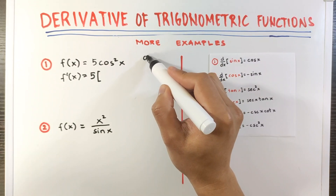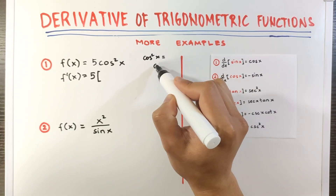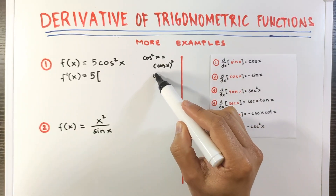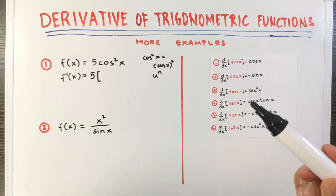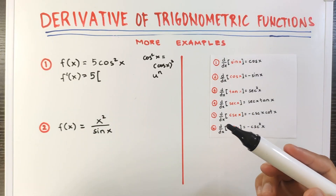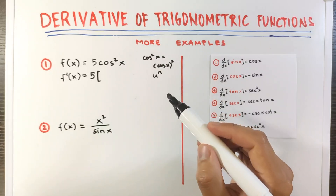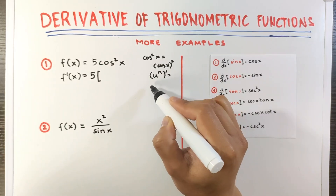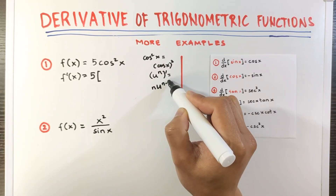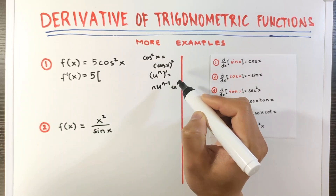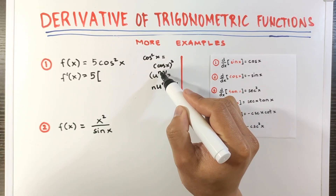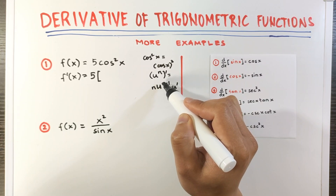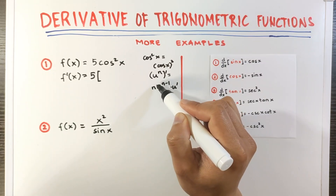Cosine squared x can be written as cosine x, the quantity squared. As you can see, this is in the form u raised to n, so we need to use the power rule combined with the chain rule. The derivative of u raised to n is equal to n times u raised to n minus 1, times the derivative of u. That means we bring down the exponent as a coefficient, subtract 1 from the exponent, and multiply by the derivative of the base.